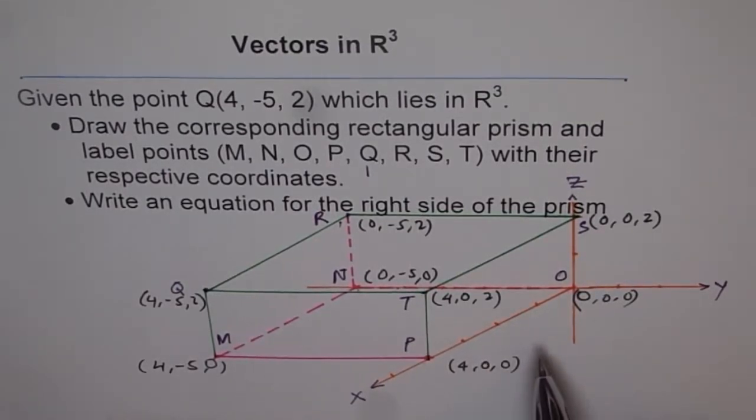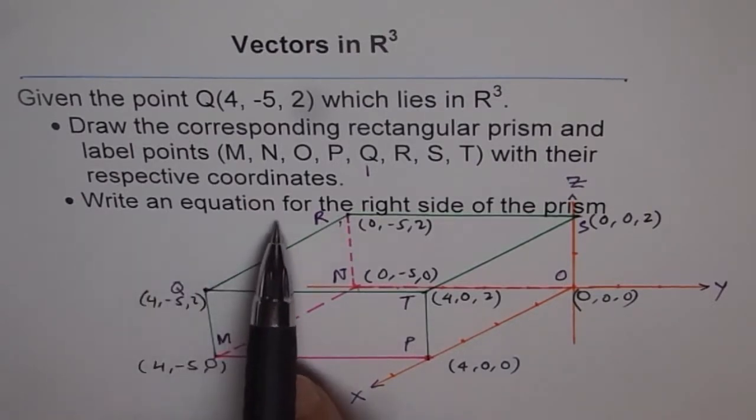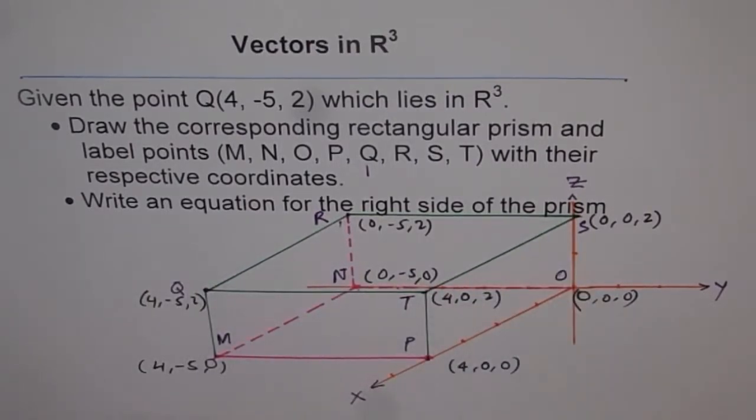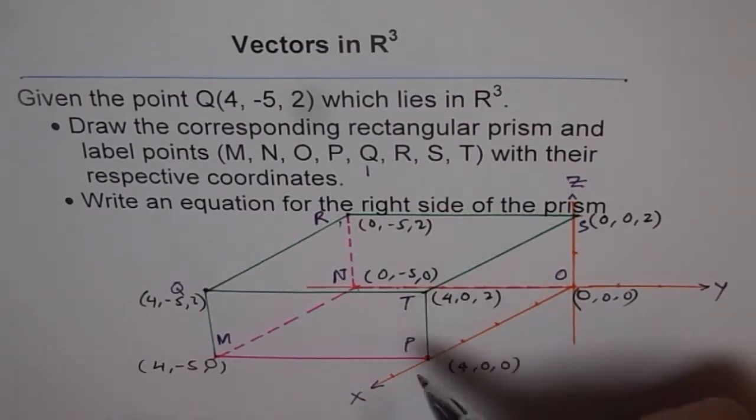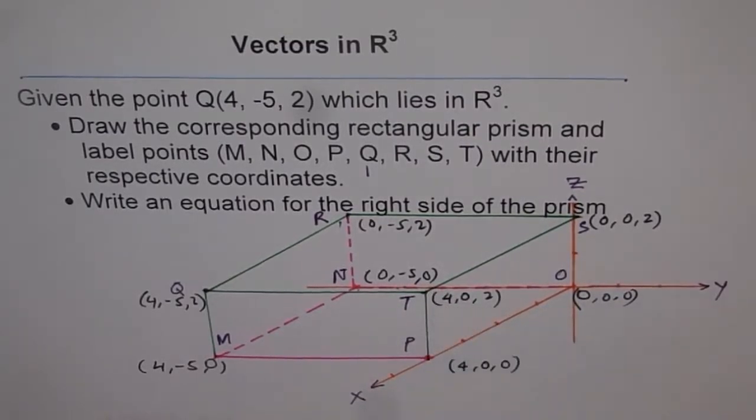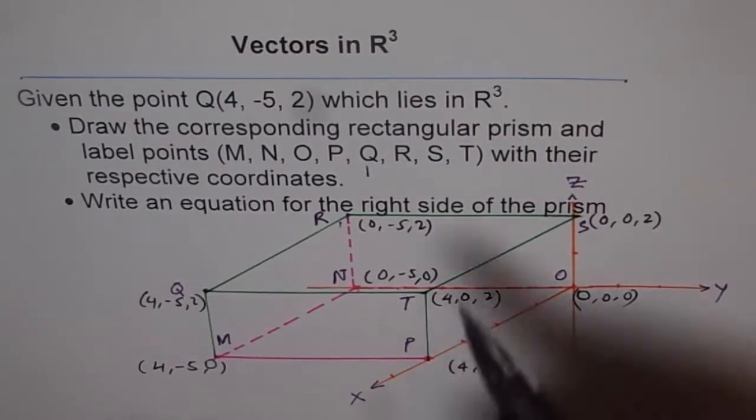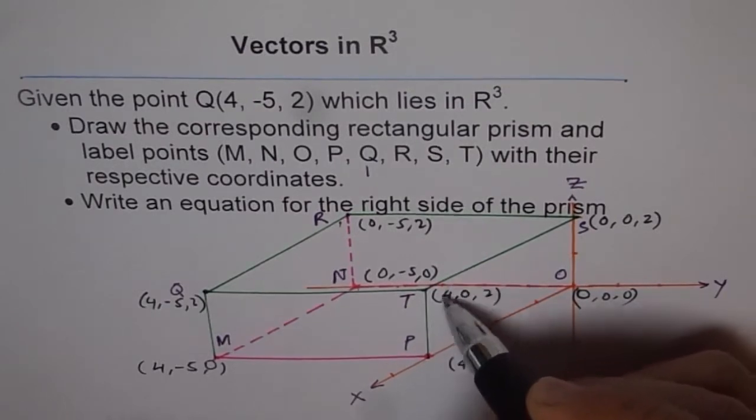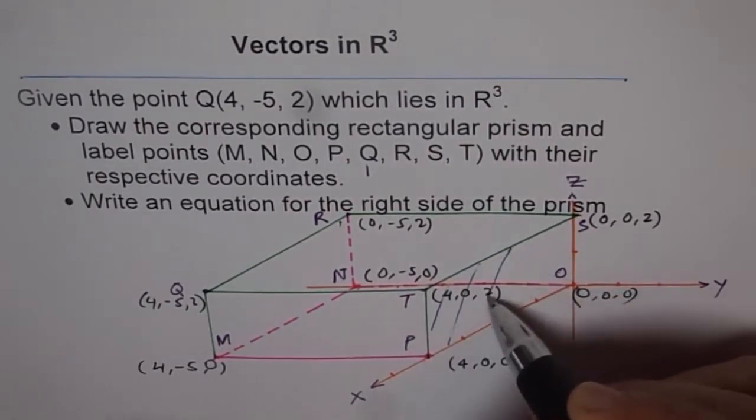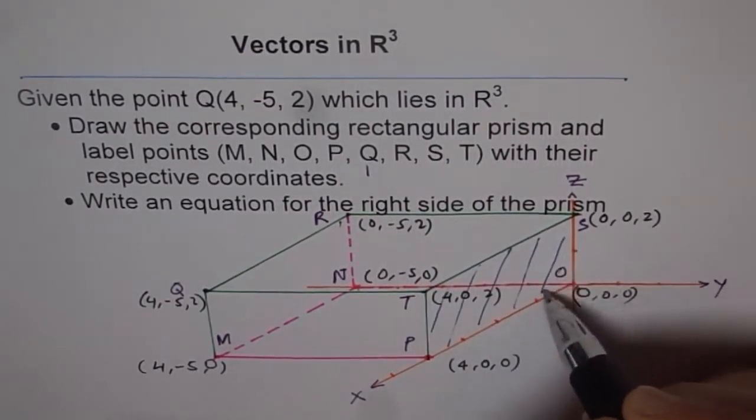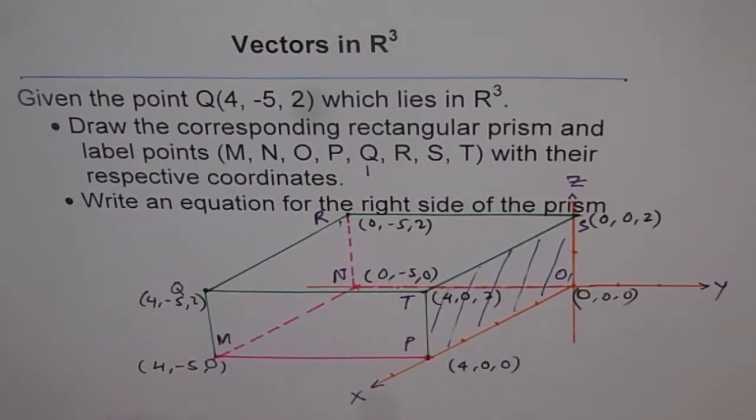Now, the question is, write an equation for the right side of the prism. This is the main equation for which I did all this. Now this is the right side of the prism. So what am I looking at? I'm looking at this side, this, this side. Do you see this side? This side of the prism I'm looking at. What is the equation of this side of the prism? That is my major question.